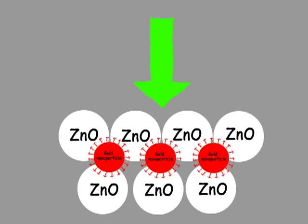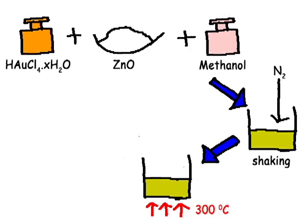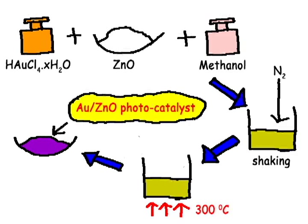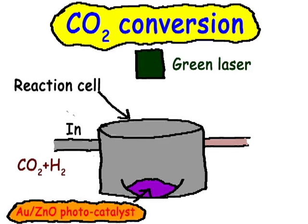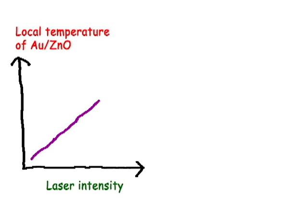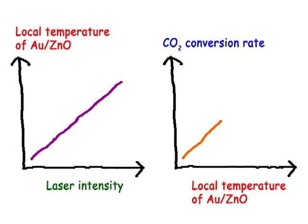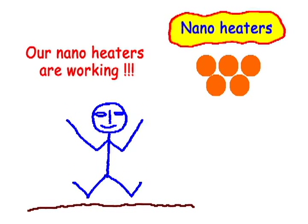After the green light absorption, gold nanoparticles generate highly localized heat in the vicinity of a few nanometers. Inside the laboratory, we synthesized the gold zinc oxide photocatalyst using a few chemicals and a simple method. We tested carbon dioxide conversion inside the lab using a green laser, and we detected methane as a product. When we increase the laser intensity, the local temperature of zinc oxide increases, causing the carbon dioxide conversion rate to increase. This is the successful story of our nano heaters.